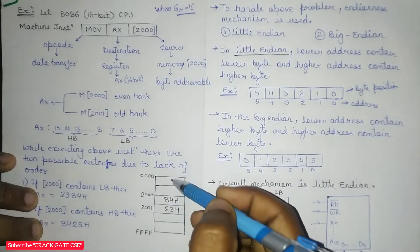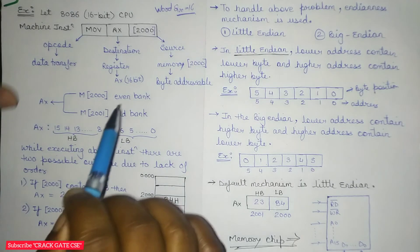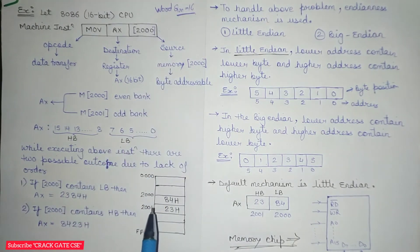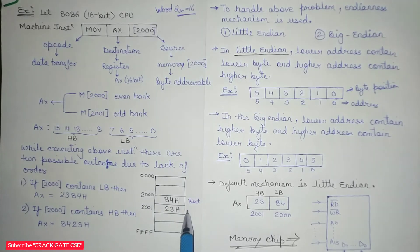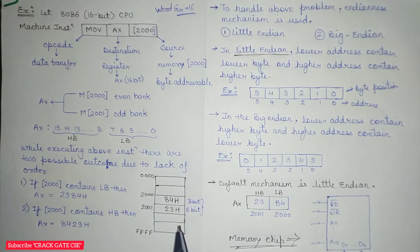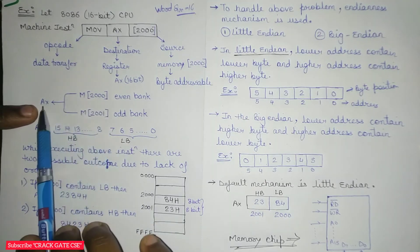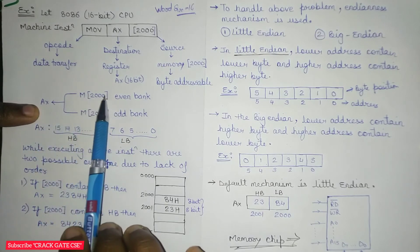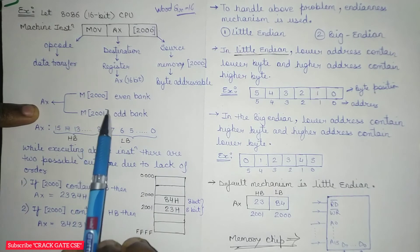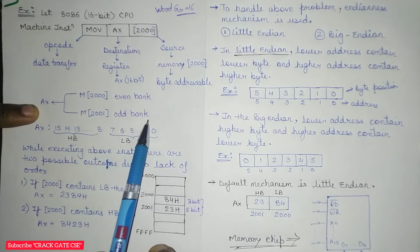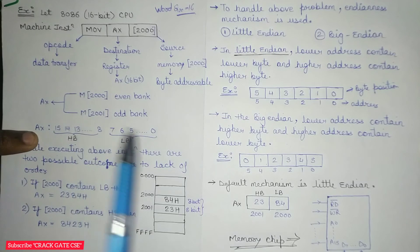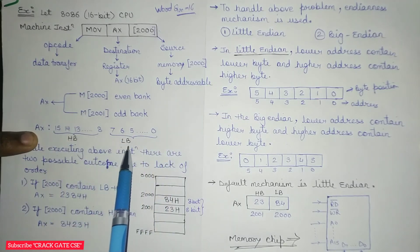Since we need to store 16 bits starting from address 2000, address 2000 holds 8 bits and address 2001 holds the next 8 bits — both cells together act as 16 bits. We need to load both 2000 and 2001 into register AX. The address with an even number is the even bank; the address with an odd number is the odd bank. Bits 0 to 7 in AX are the lower byte and bits 8 to 15 are the higher byte.